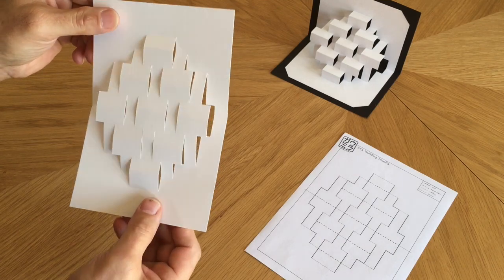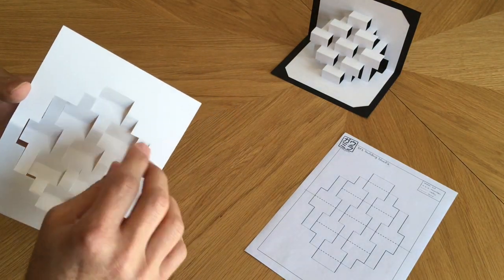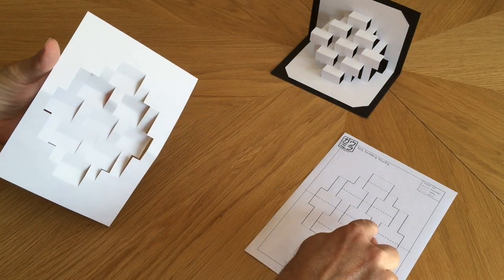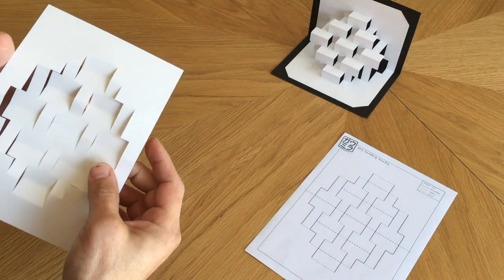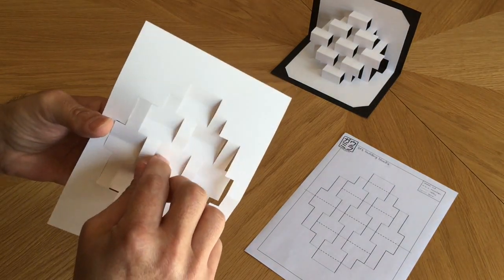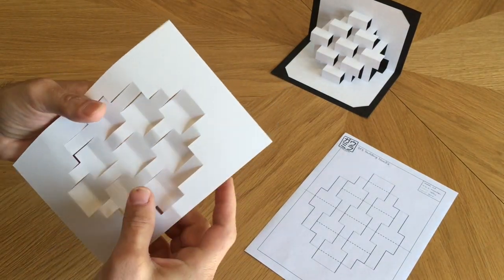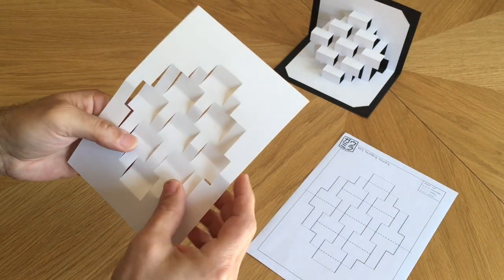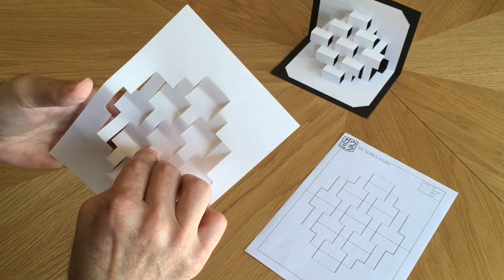The next step is to turn it over and try to reinforce all the little valley folds in between those mountain folds. You can see on the template you can consult whenever you need to see which are the valleys and which are the mountains. But after you've done it a few times, I think you'll learn to see which is which pretty clearly.